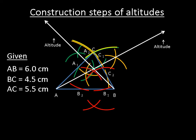Then with the help of a ruler, draw a straight line from point C passing through the intersecting points of these arcs. This is an altitude drawn from point C towards the line AB. You can see that all the three altitudes are intersecting at a common point O, so they are concurrent.